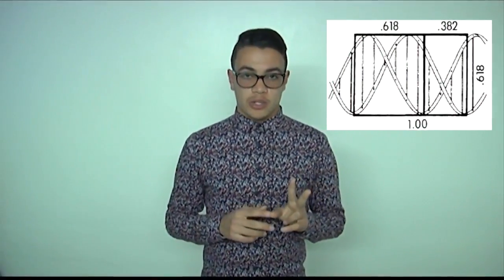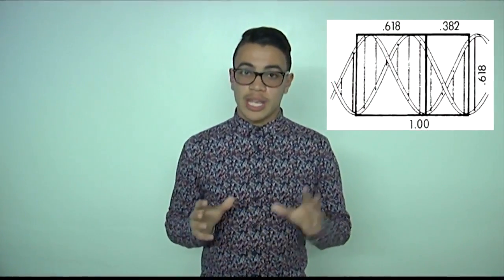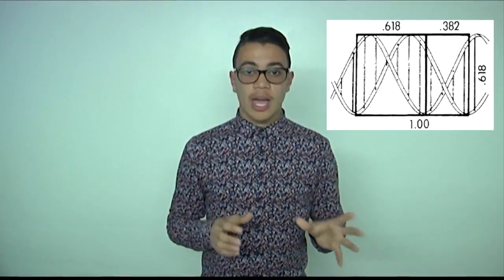The DNA molecule is made up of two intertwining spirals. We find the 0.618 ratio between the helix's width and the cycle length.